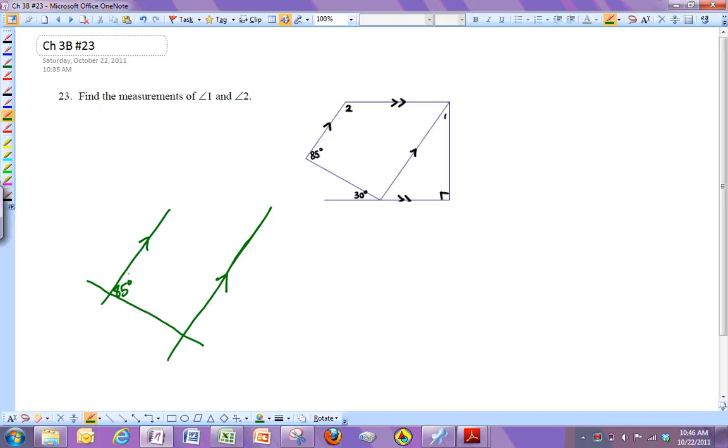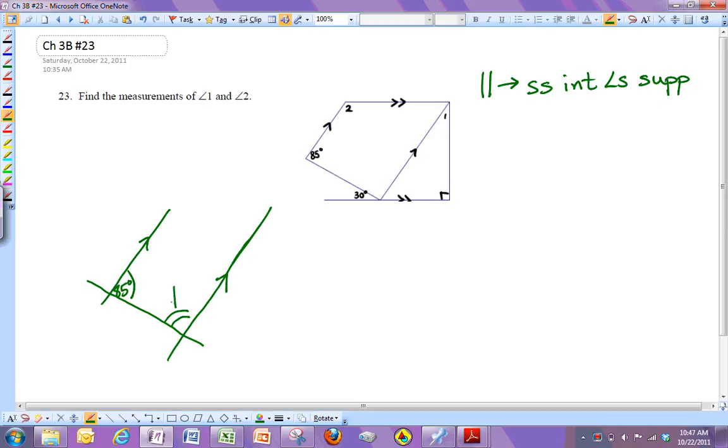So if you look at them, I've got this angle and this angle here. And those angles are same side interior angles. And since these lines are parallel, they give me same side interior angles that are supplementary. So that means that this angle has to add up with this one to get 180 degrees. So 180 equals 85 plus whatever I want to call this. I'll call it x. So that's going to make x 95 degrees.